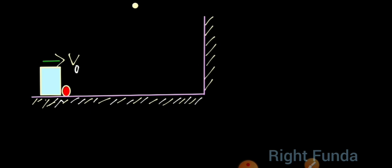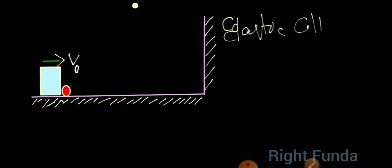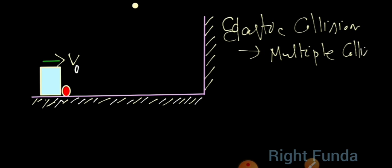The key points: first, the block collides with the ball and all collisions are elastic. Second, there are not just one but multiple repetitive collisions. Third, mass M is much, much greater than small m — the block is very heavy compared to the ball.